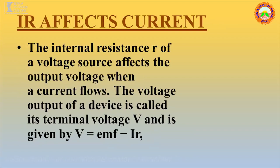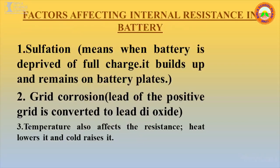The internal resistance (small r) of a voltage source affects the output voltage when a current flows. The voltage output of a device is called its terminal voltage and is given by V = E − Ir.